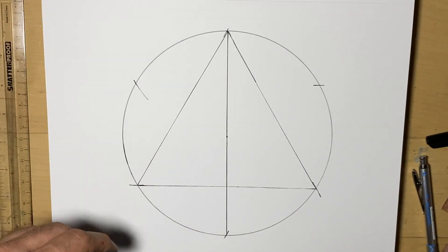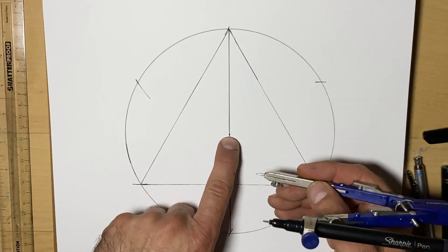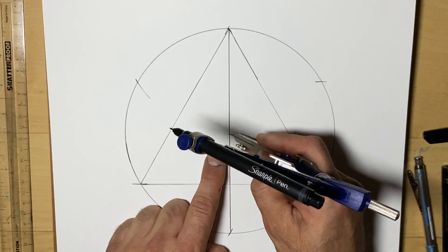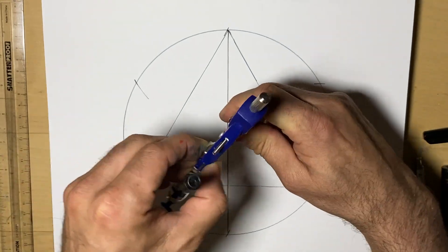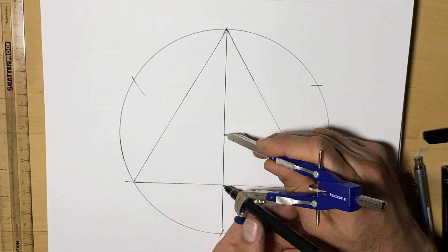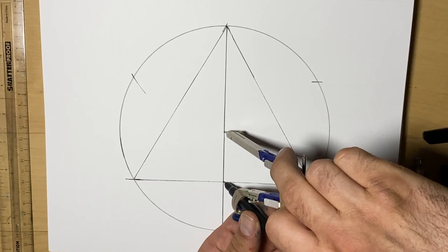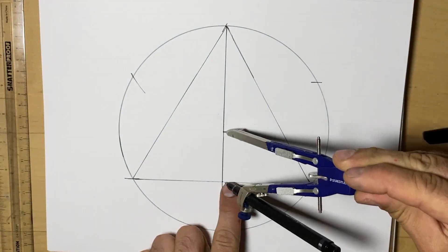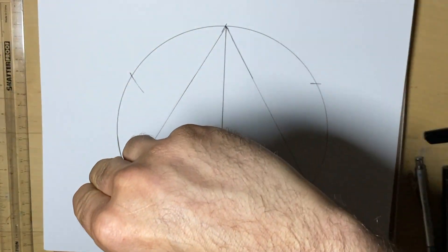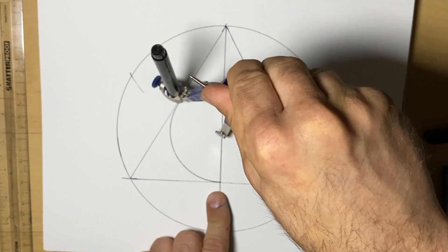So to finish, I'm going to use that center one last time. And I'm going to adjust the compass so that the pen touches the bottom of the triangle. And when it touches the bottom of the triangle, we're ready to rotate it and to make that circle.